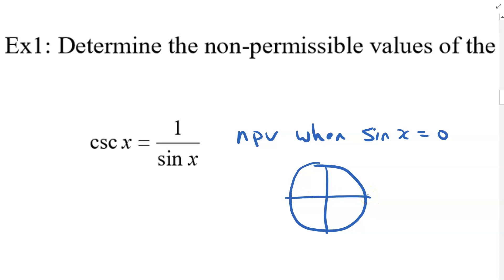Sine is the y value on the unit circle, so I think it'd be zero here, and also it'd be zero there. So I'm going to say that non-permissible values are going to be when x is the angle of either zero or pi.